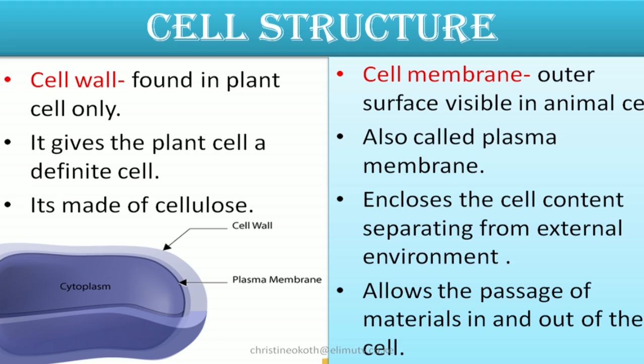The next structure is the cell membrane, which is found in both the plant and the animal cell. This is the outer surface, very visible in the animal cell. Another name for the cell membrane is the plasma membrane, and this one acts as a housing — it encloses all the cell content and separates it from the external environment. Another function of the cell membrane is that it allows the passage of materials in and out of the cell through very tiny pores found on the cell membrane.